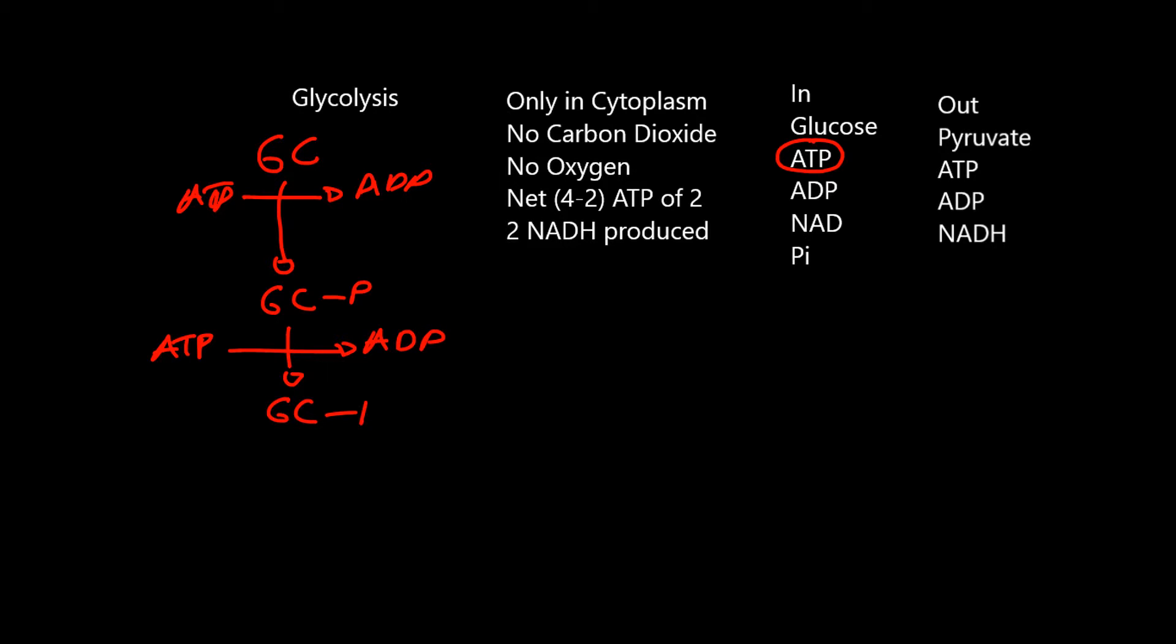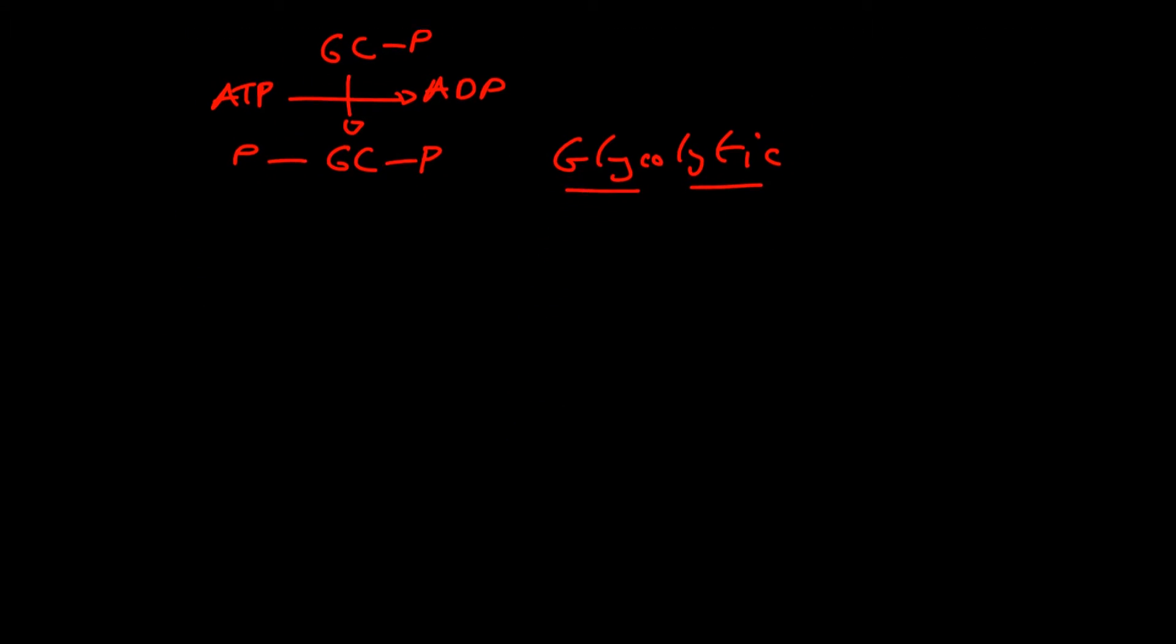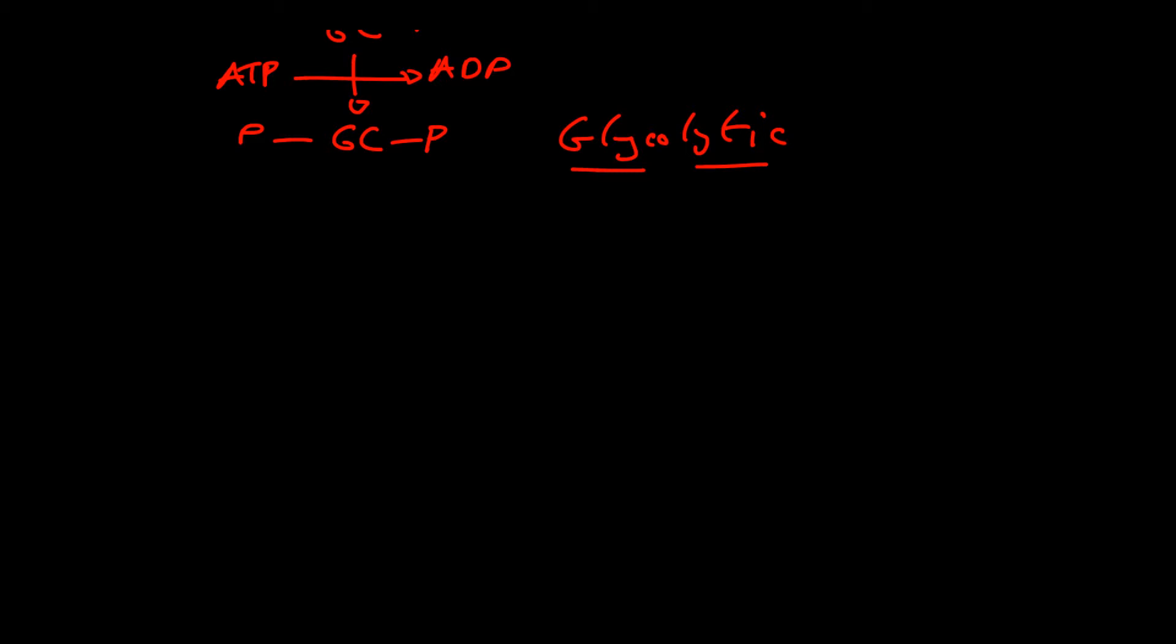The next step is the glycolytic step. Lysis means to break, glyco is glucose, so this is the glycolytic step. The glycolytic step produces two triose phosphates, that is a three carbon with a phosphate attached to it.